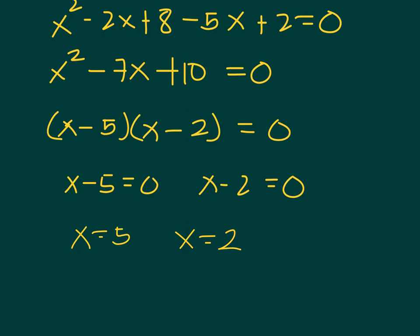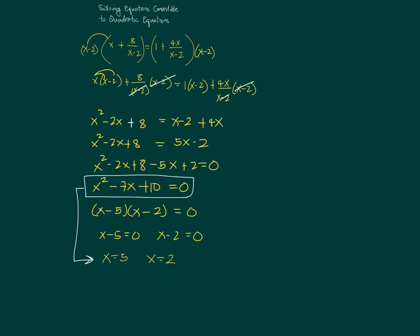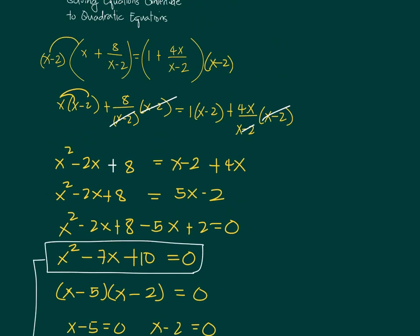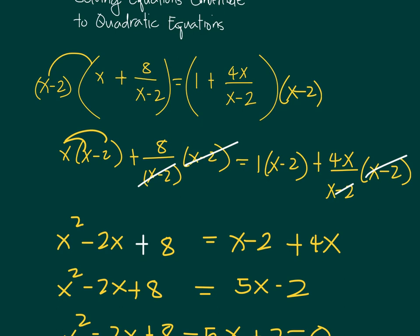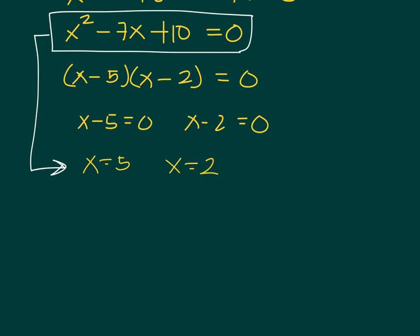Now, if we were just solving x squared minus 7x plus 10 equals 0, we could say the solutions are x equals 5 and x equals 2. However, you have to be careful when working with rational equations, because not all x values you obtain are allowed in the given equation. If you look at the denominator, there is an x that is not allowed because the denominator would become 0 — and when the denominator becomes 0, the fraction does not exist. So x cannot equal 2.